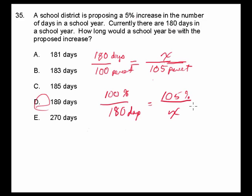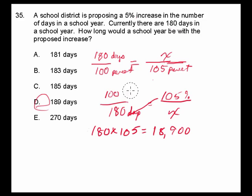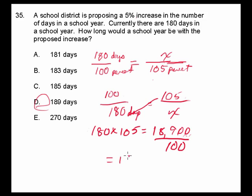Whenever you set something up as proportions, you simply cross-multiply: 180 times 105 equals 18,900. Then you divide that by 100 — removing the percentage sign since that was just for reference — and we simply move the decimal two places, and we are left with 189. So, three different ways to arrive at the same answer.